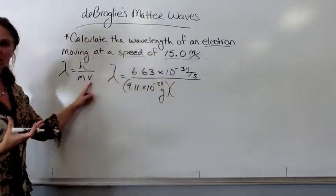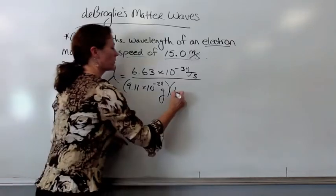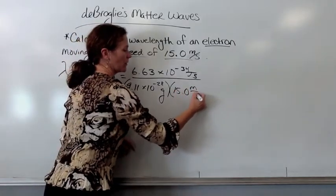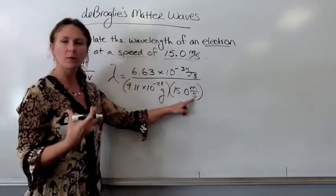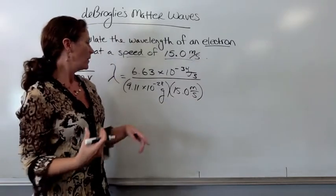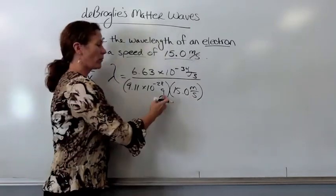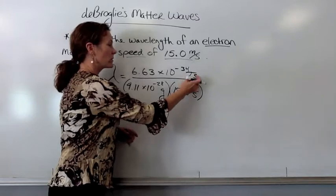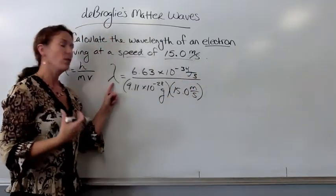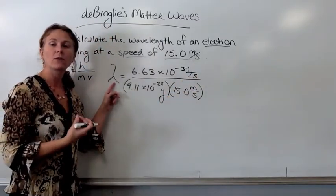Now, we need the velocity. The speed of the electron is 15.0 meters per second. Now, I'm really going to make my meters per second look like a fraction. We have a lot of these units going on. We have grams, meters per second, and joules seconds here at the top. When we're looking for a wavelength, we really only need to get our unit in meters.